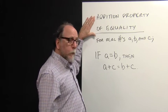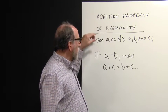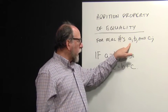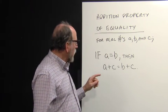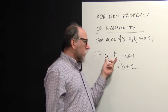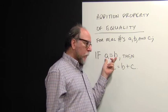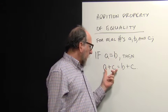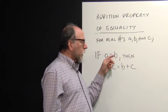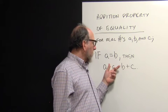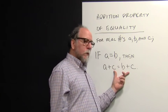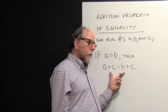First one's called the addition property of equality. That works for any numbers a, b, and c that are real numbers. If we already know that two things are equal, like a and b are equal, then a plus c is equal to b plus c. These are called equivalent equations. We can add something to both sides of an equation and they'll still be equal.